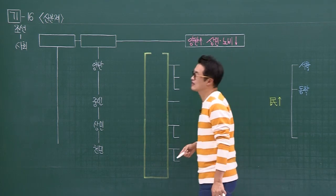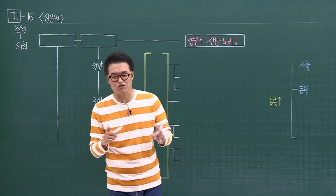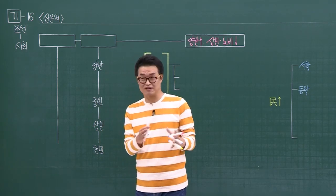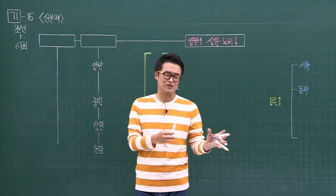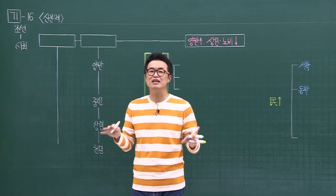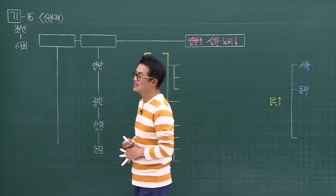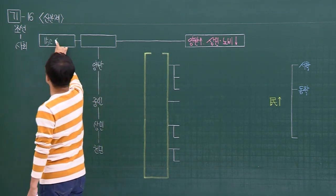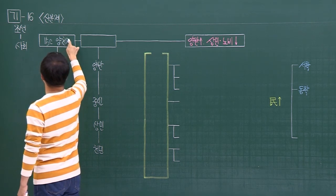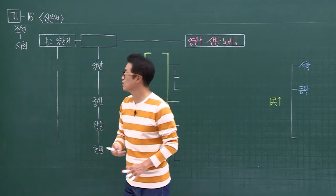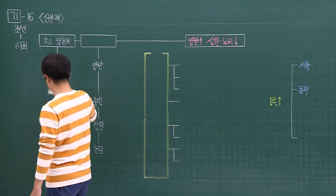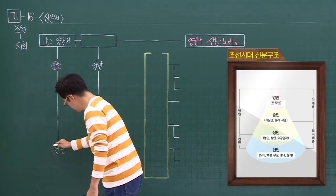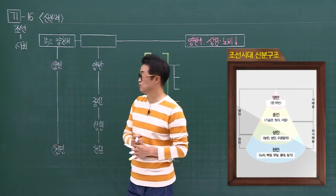먼저 신분제를 한번 볼 텐데요. 조선의 신분제도는 기본적으로 15세기를 보면, 15세기와 16세기를 이끌고 있던 역사 주도 세력이 달라진다고 했죠? 15세기 세력들은 조금 융통성이 있는 세력들이었고, 16세기는 굉장히 보수적인 원칙주의적인 세력들이 주도했습니다. 15세기를 보면 양천제, 양인과 천민으로 크게 신분을 두 개로 나눈 거예요. 그래서 양천제라고 합니다.